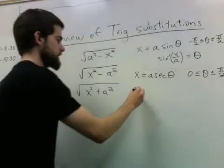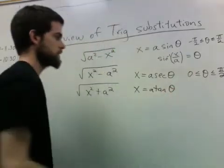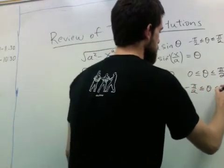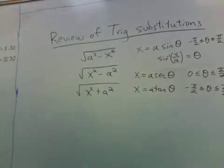And with these types involving x squared plus a squared, we'll be substituting x is a tangent theta. And again, theta will have to be restricted to go from negative pi over 2 to pi over 2.